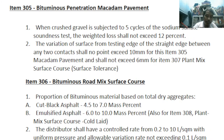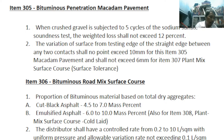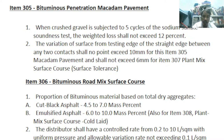Item 305 is Bituminous Penetration Macadam Pavement. Number one: when crushed gravel is subjected to five cycles of sodium sulfate soundness test, the weighted loss shall not exceed 12 percent. Number two: variation of surface from the testing edge of a straight edge between any two contact points shall not exceed 10 mm — this is the tolerance for this item.